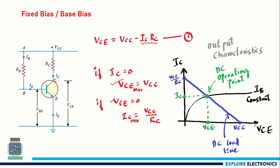The DC load line is drawn in blue. It is derived from the two expressions for VCE maximum and IC maximum, and where it intersects the active region of the output characteristics is the DC operating point, giving the DC values of IC and VCE.